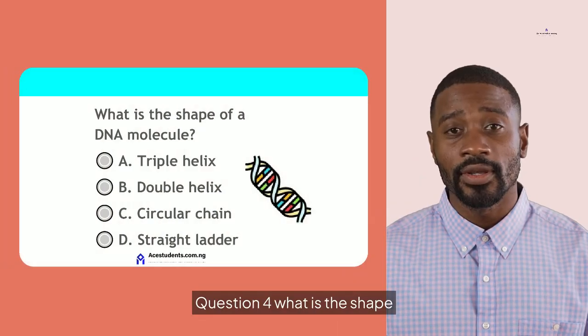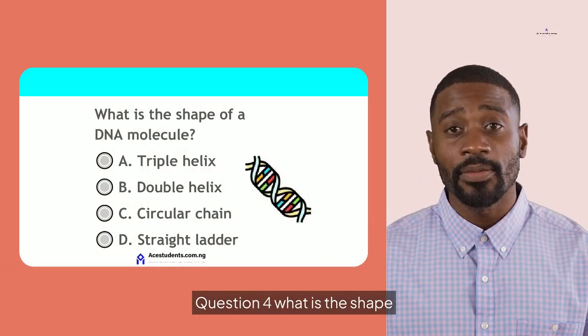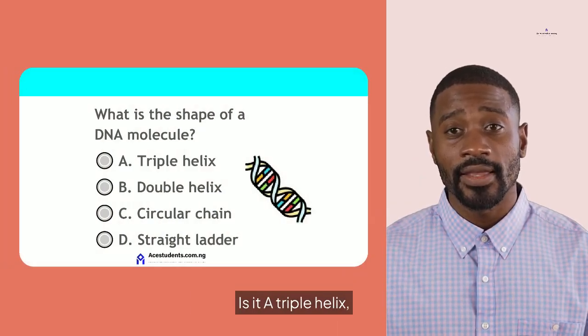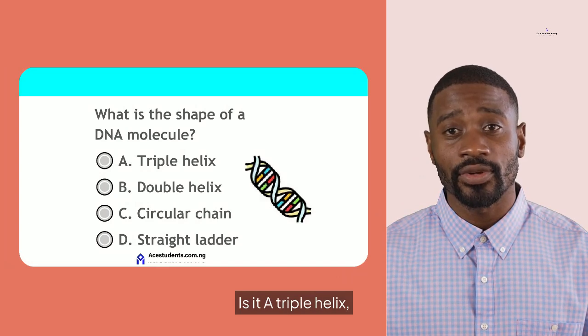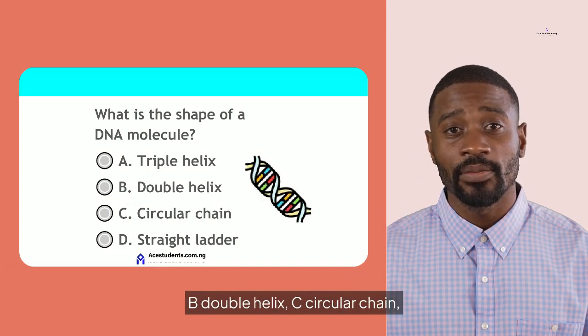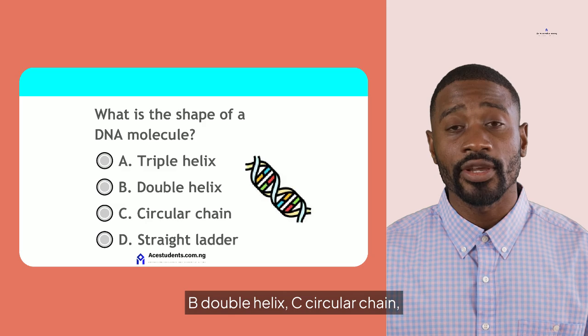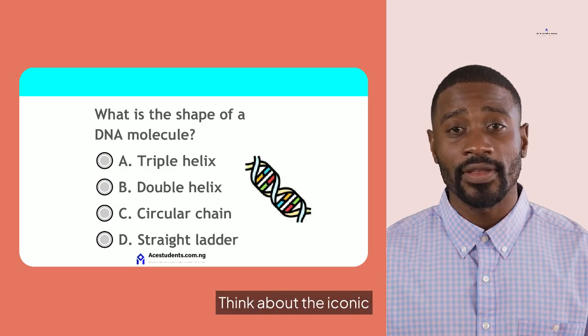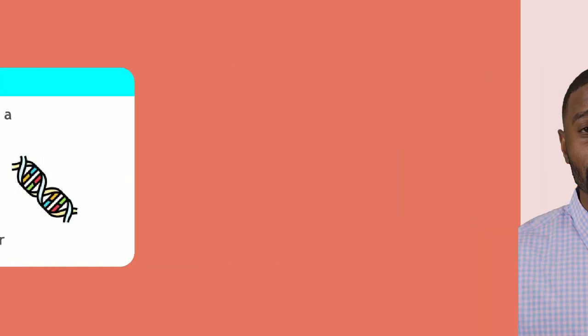Question 4. What is the shape of a DNA molecule? Is it A. Triple helix, B. Double helix, C. Circular chain, or D. Straight ladder? Think about the iconic structure of DNA.